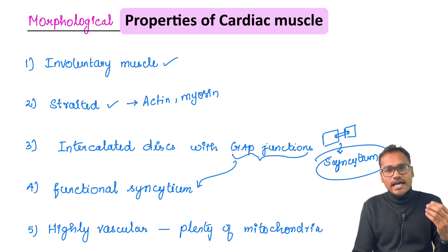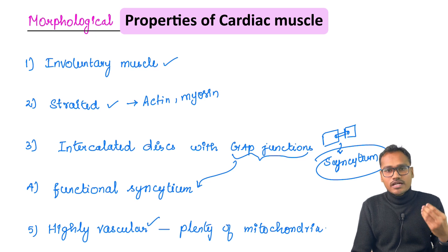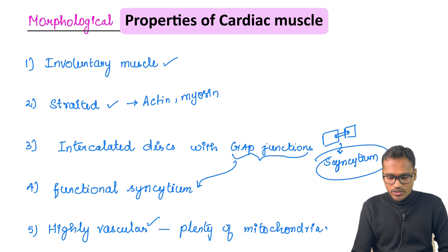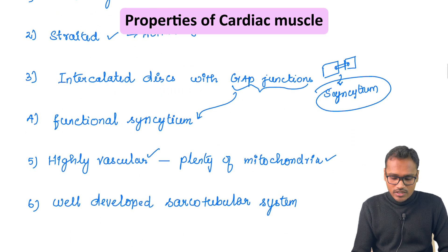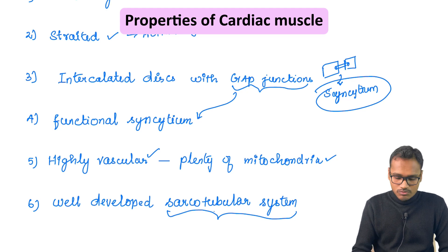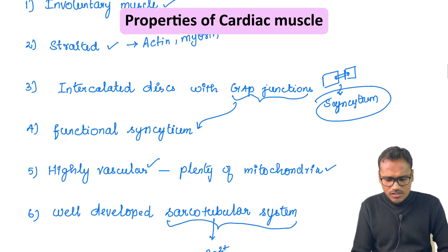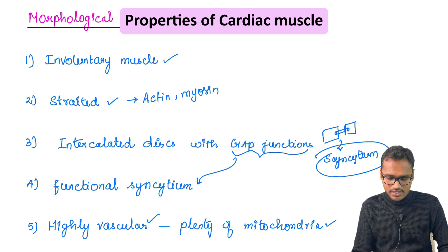The cardiac muscle also has highly good vascularity, which helps it to survive and receive maximum oxygen. There is plenty of mitochondria present, and it has a well-developed sarcotubular system, which serves as the storehouse for calcium. These are the key morphological properties.